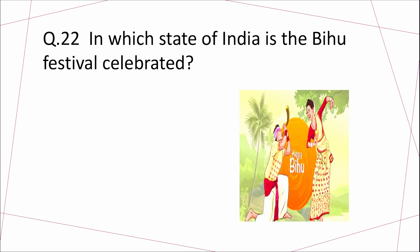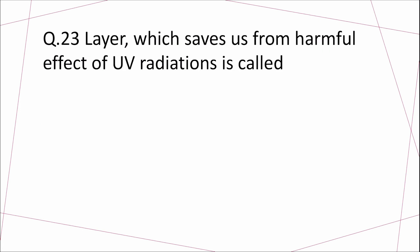Question 22: In which state of India is the Bihu festival celebrated? Answer: Assam. Question 23: The layer which saves us from the harmful effects of UV radiation is called? Answer: The ozone layer. The full form of UV is ultraviolet radiation.